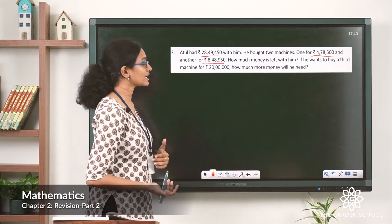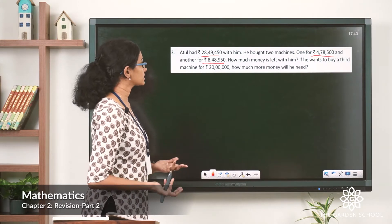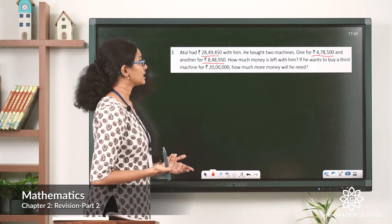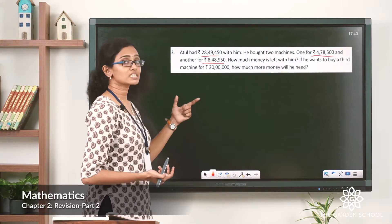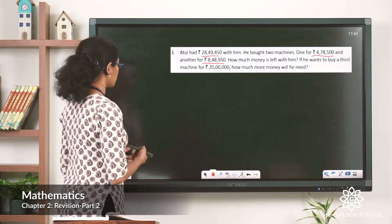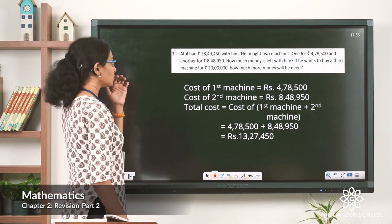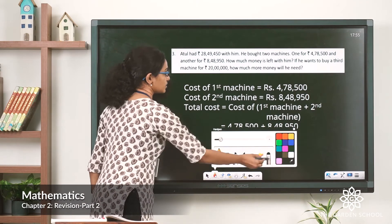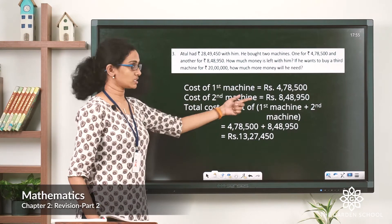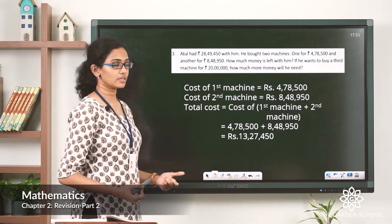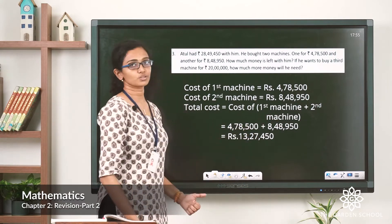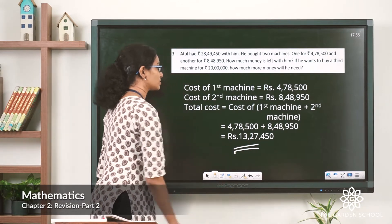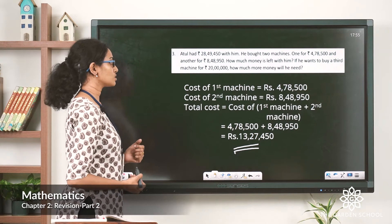That subtraction gives us the money he is left with. There is one more part to the question: if he wants to buy a third machine for rupees 20 lakh, how much more money will he need? From the data given, let's write down the steps. Cost of first machine plus cost of second machine gives us the total cost. Substituting the values gives a total cost of rupees 13,27,450.